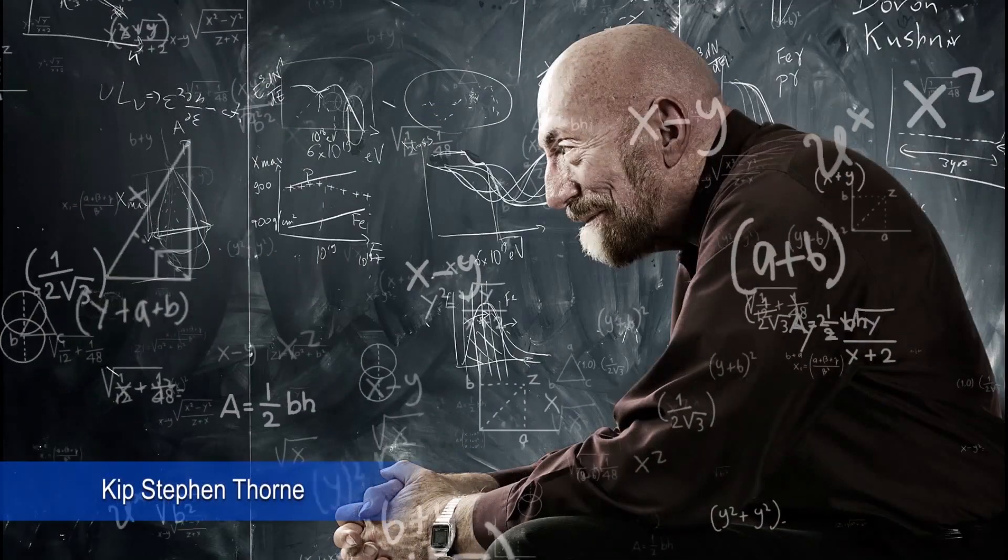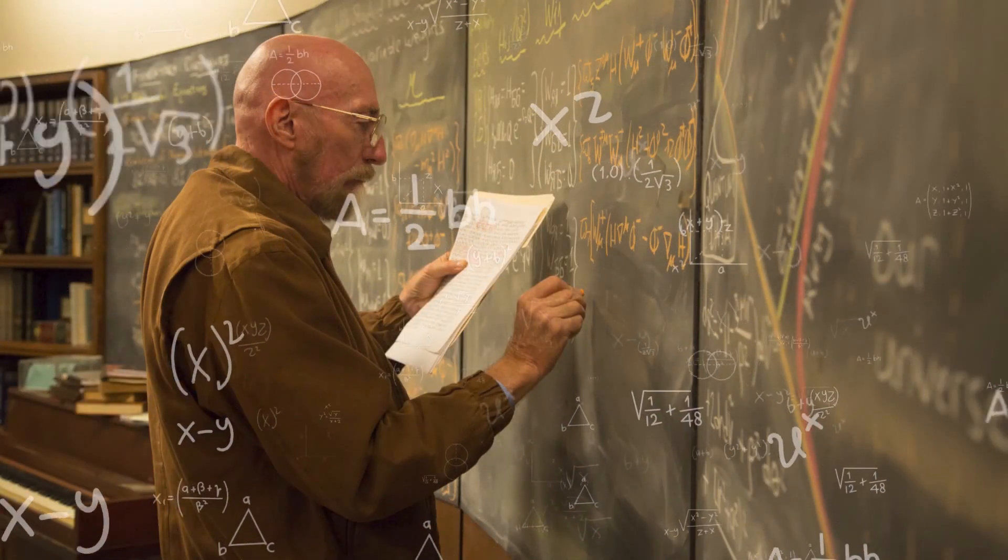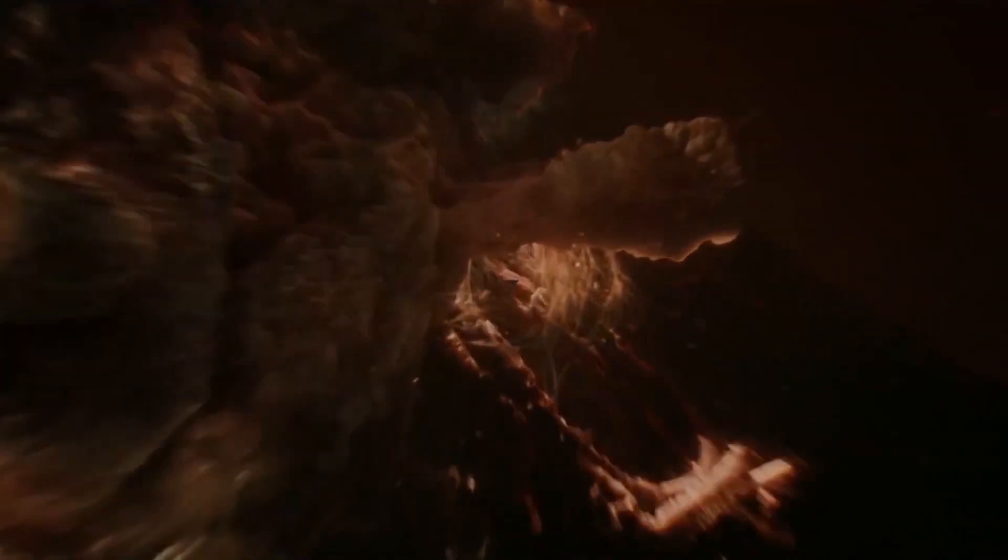Kip Thorne, one of the world's leading authorities on relativity, black holes, and wormholes, said that there are very strong indications that wormholes that a human could travel through are forbidden by the laws of physics. That's sad, that's unfortunate, but that's the direction in which things are pointing.